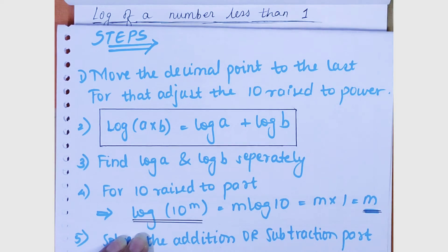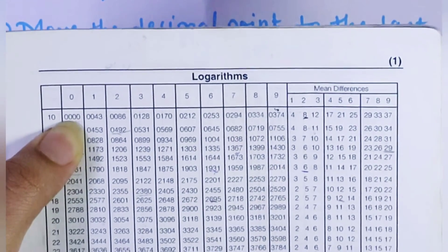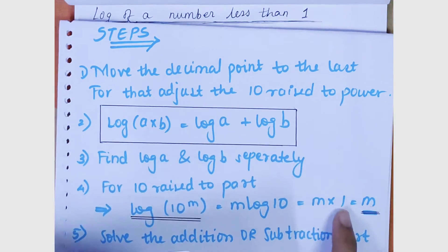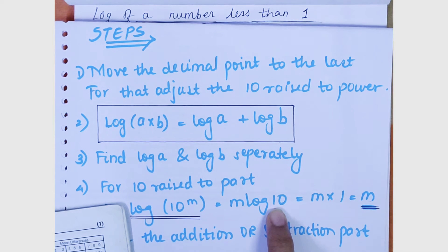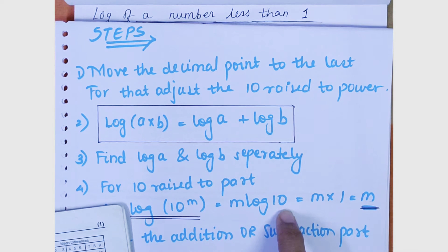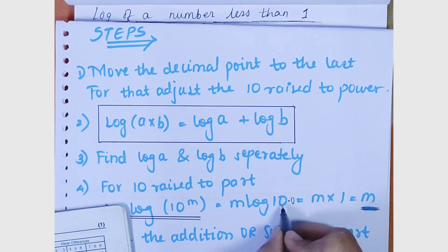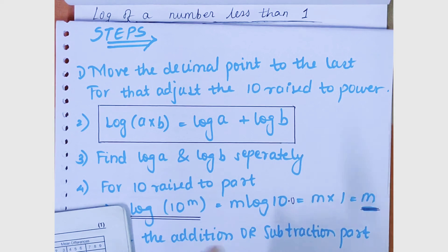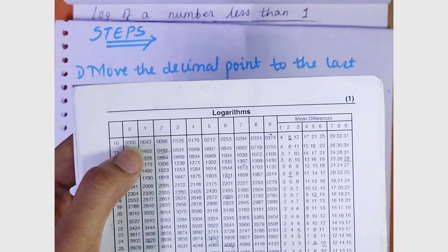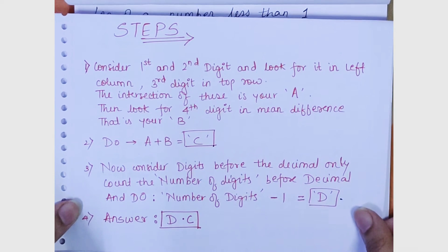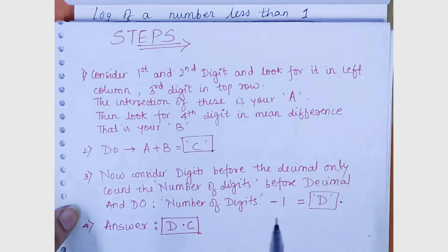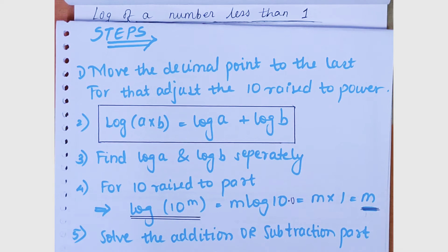What is log 10? When you look in your log tables you'll see that log 10 is 0.0000 — but we write it as 1 because there are two digits in 10. To find log of 10: count the number of digits before the decimal place, which is 2, so 2 − 1 = 1, giving 1.0000. If you don't know this trick, please watch my previous video on how to find the log of any number. The fifth step says: solve the addition or subtraction part.